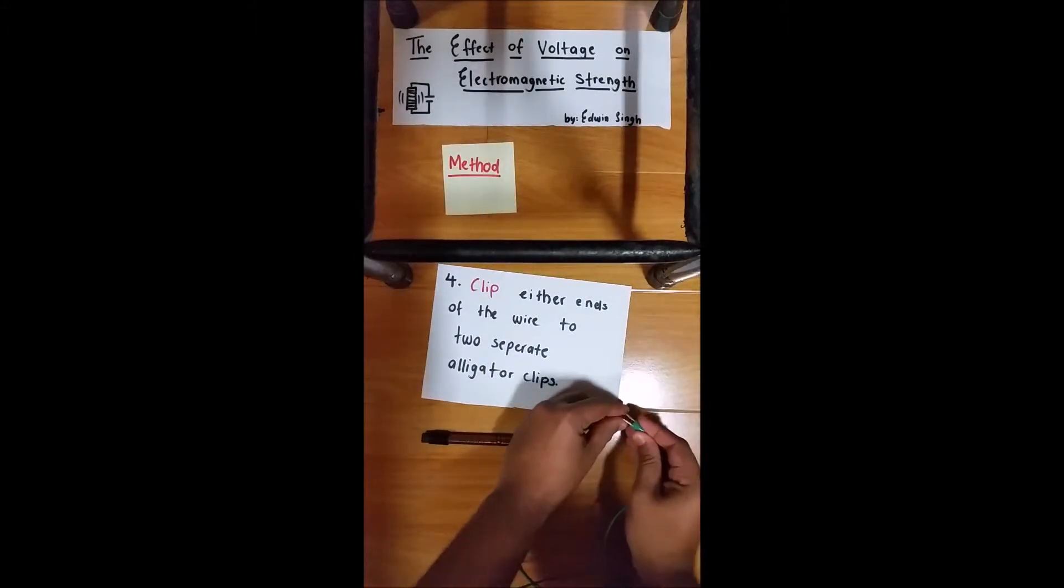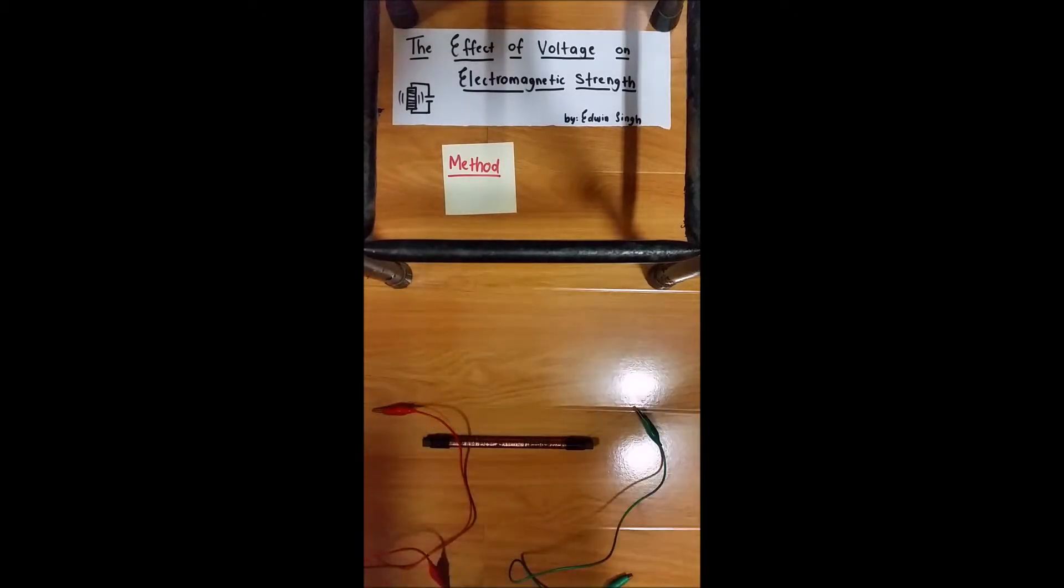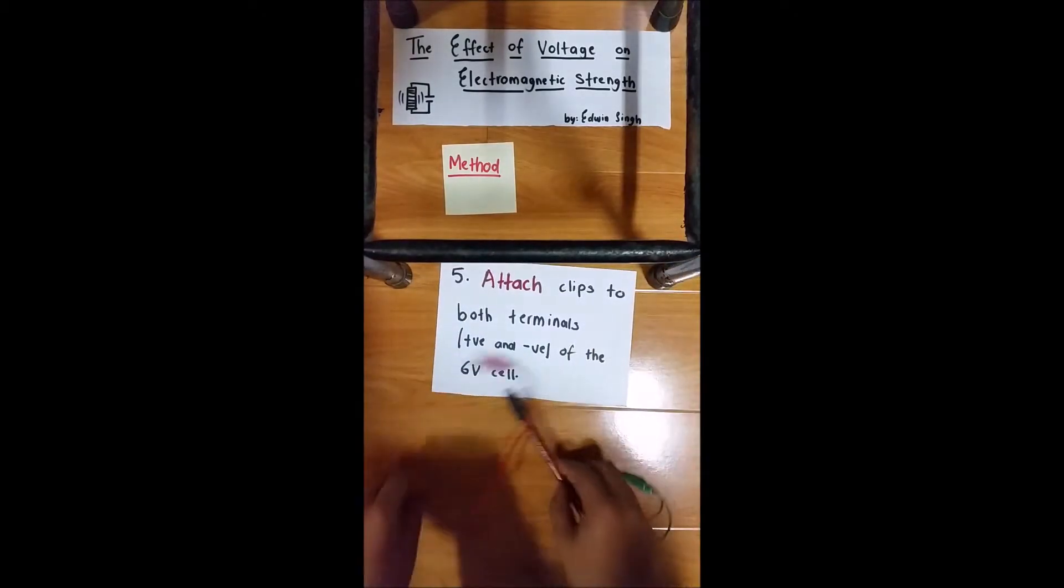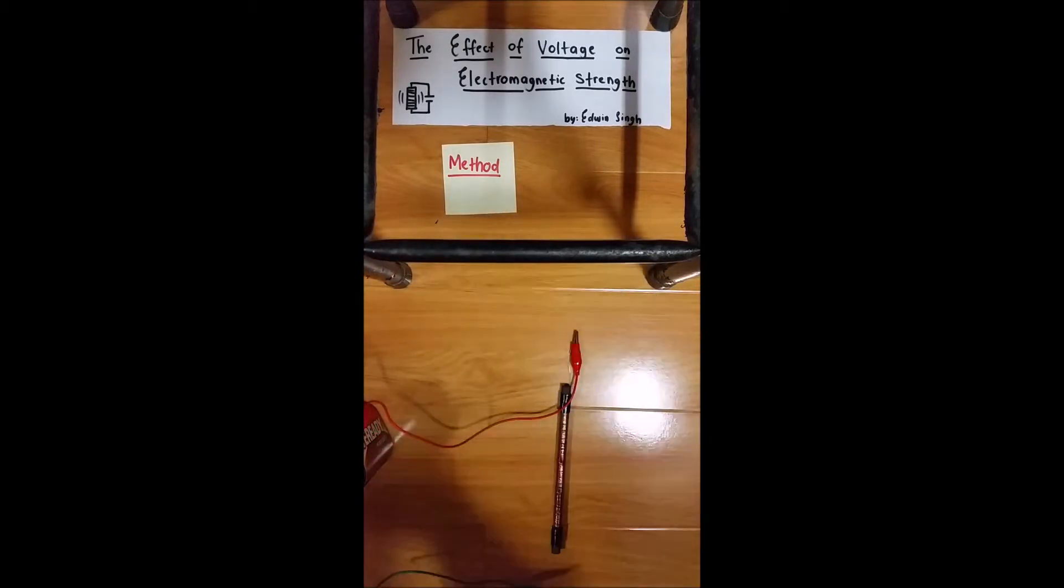Step 4, clip either end of the wire to two separate alligator clips. Step 5, attach these alligator clips to two terminals of the 6-volt cell. Now that an electric current is passing through it, an electromagnet is produced.